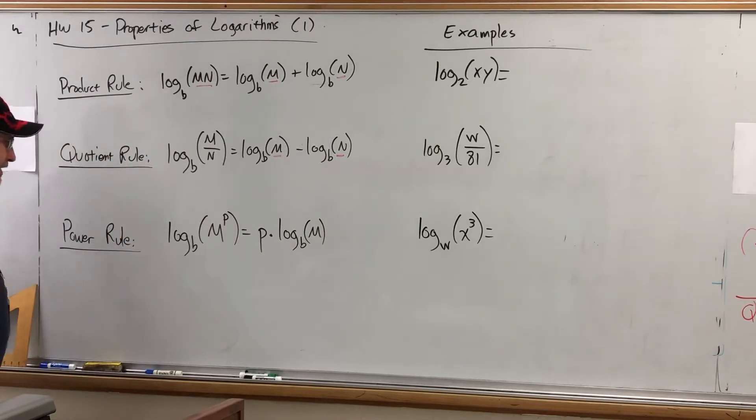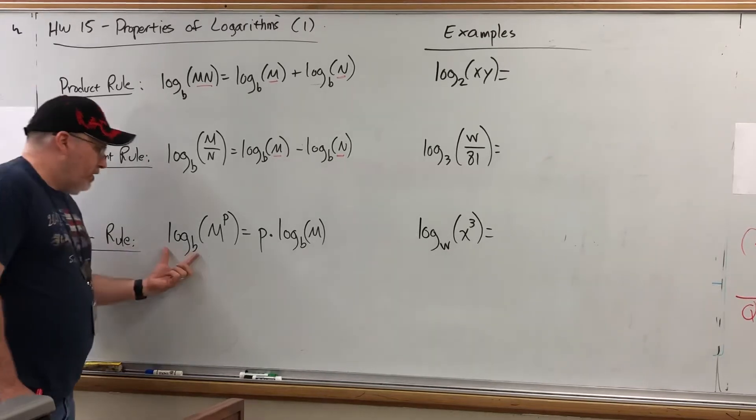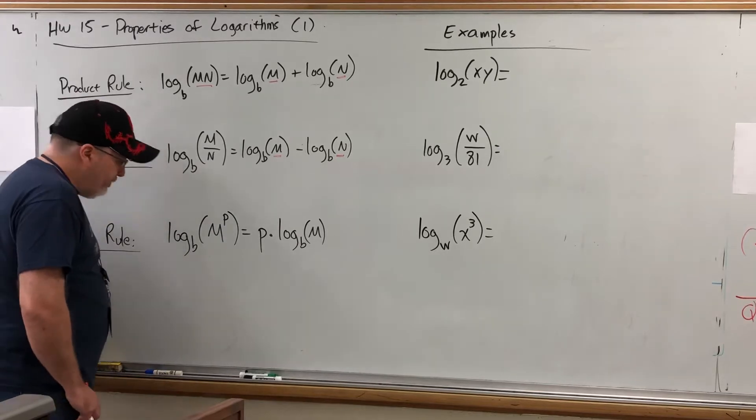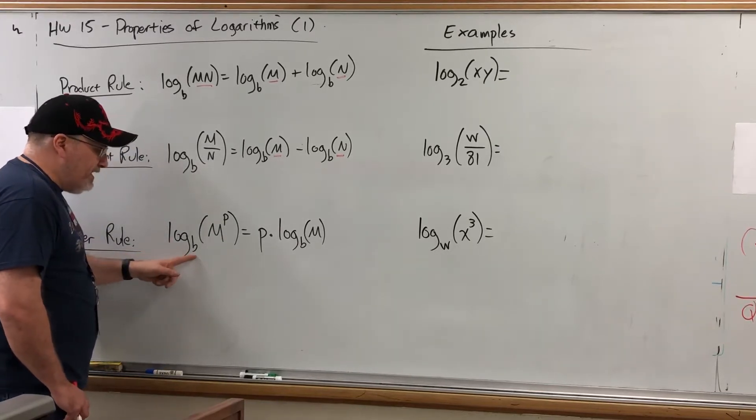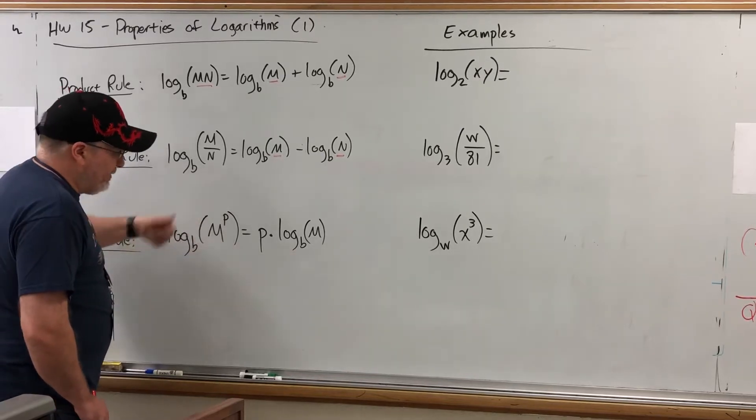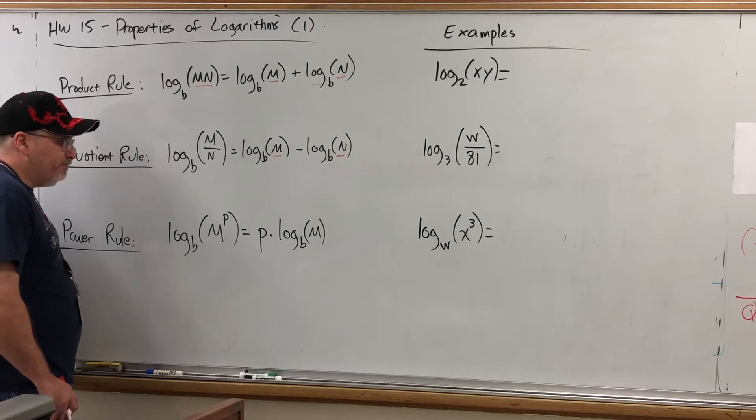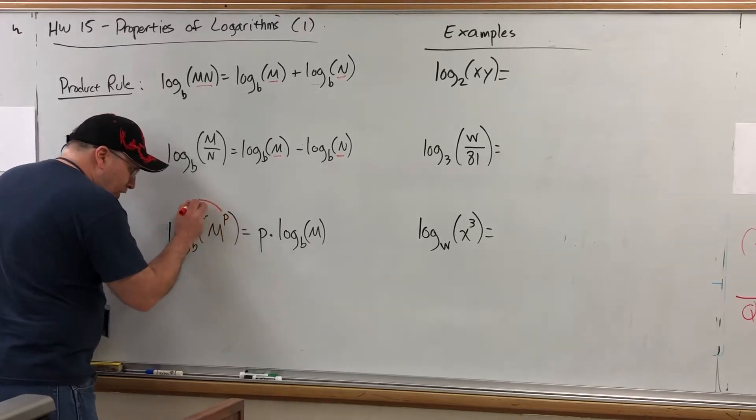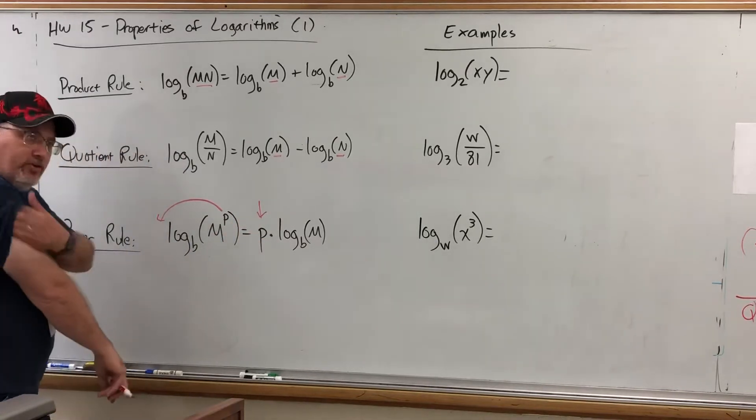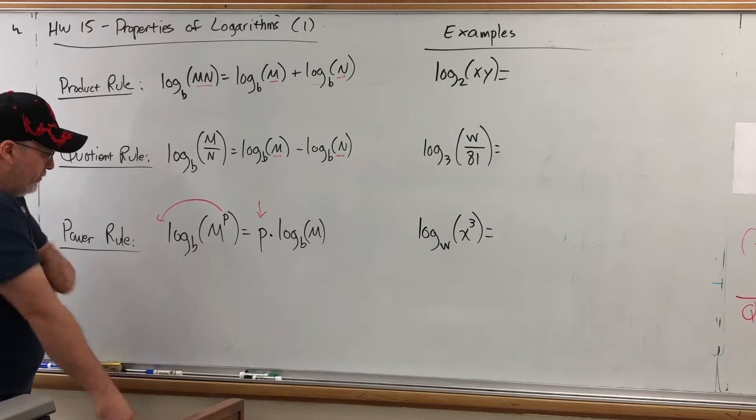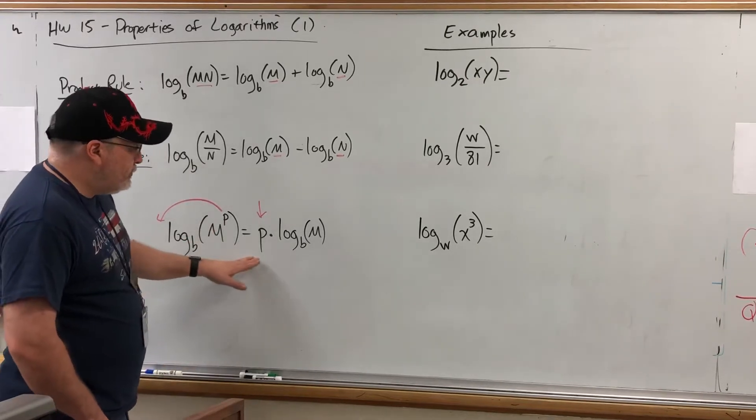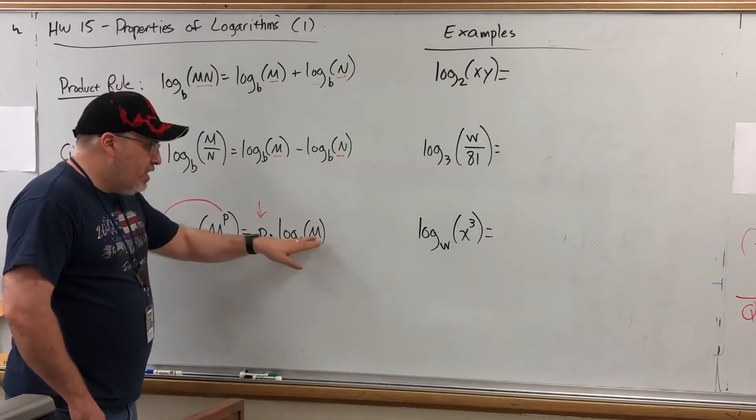The Power Rule says what to do when you're taking the logarithm of an argument that has a power on it. And it's pretty straightforward. If you're taking a logarithm, base b, of some argument, which I'm calling m, but that argument has a power on it, which I'm calling p, you can remove the power from the argument and put it in front of the log as a factor in a multiplication problem. So the log base b of m to the p power equals p times log base b of m.